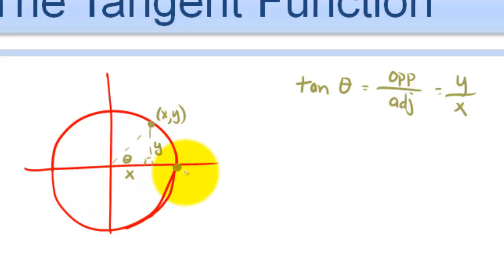This point right here was 1, 0. Here we are at 0, 1. Here, negative 1, 0. And down here is at 0, negative 1. I'm going to go ahead and put in my radian measures, which were 0, pi over 2, pi, 3 pi over 2. And then we wrap back around at 2 pi.